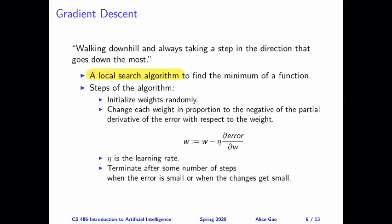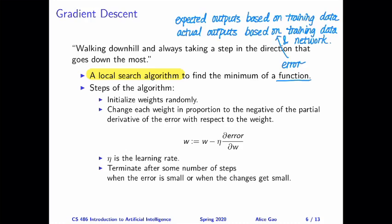In the case of a multi-layer feedforward neural network, we are trying to minimize a function and the function we're trying to minimize is the error function. Now the error we're trying to minimize is between the expected outputs based on the training data and the actual outputs based on the weights in our current network and also the training data.